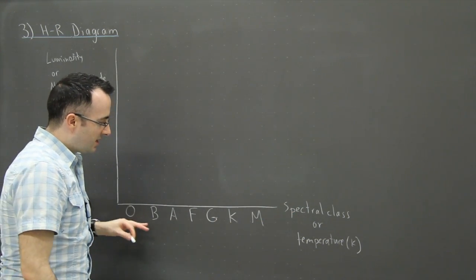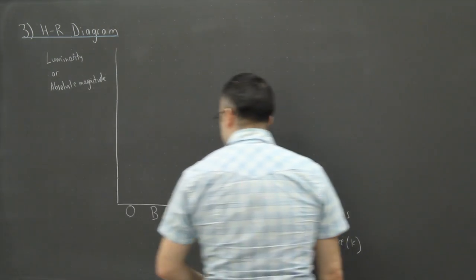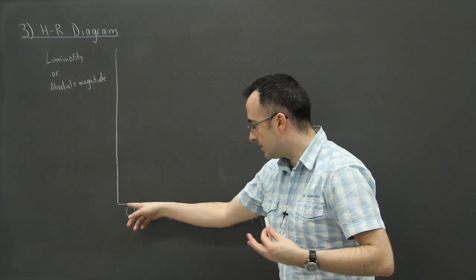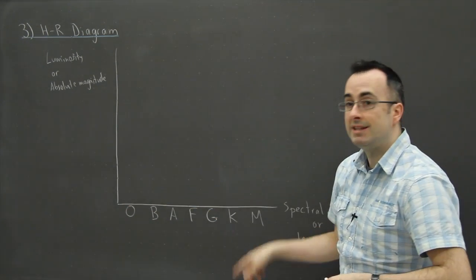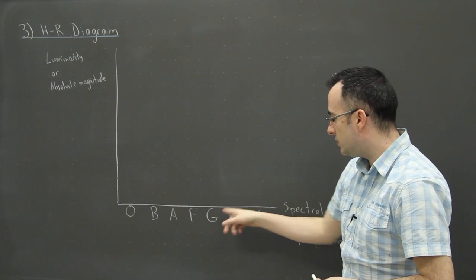Now I would say this is again a little bit historic, and it's kind of, well, you have to learn that, at least on a test, you're expected to know these in order. So you're supposed to know that it goes O, B, A, F, G, K, M.